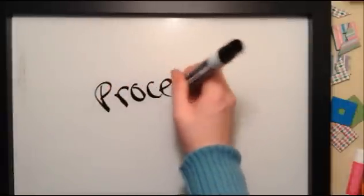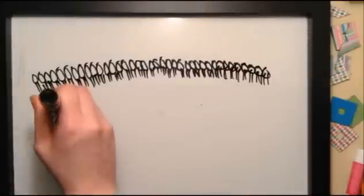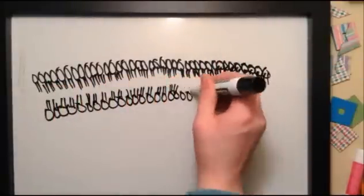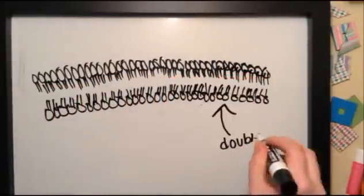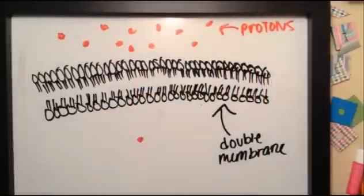Let's go over the process. All these little phospholipids make up a double membrane. We also need more H plus hydrogen protons on one side than the other.